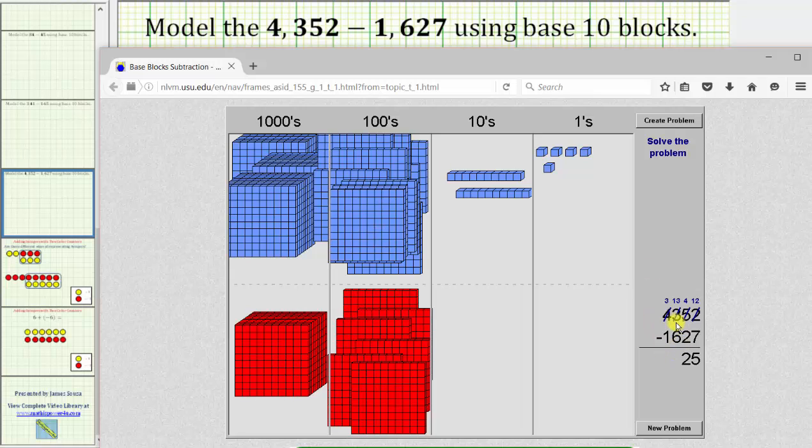Looking back at our work, the exchange is shown by changing the four in the thousands place value to a three, giving us 10 hundreds. We already had three hundreds, giving us a 13 in the hundreds place value. And now we will remove six flats from the 13 flats.